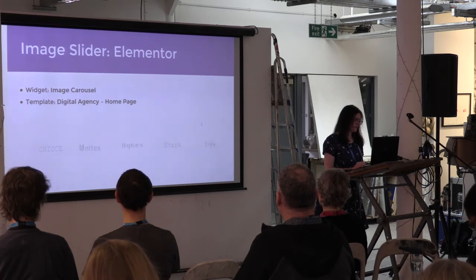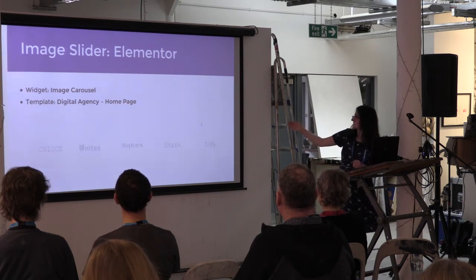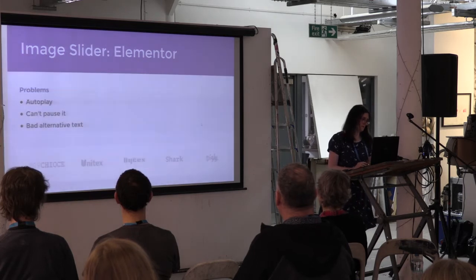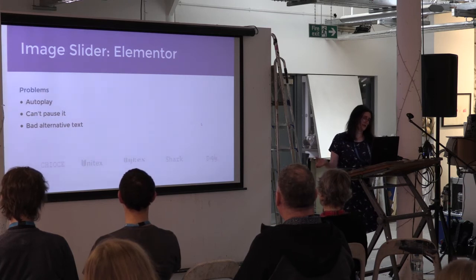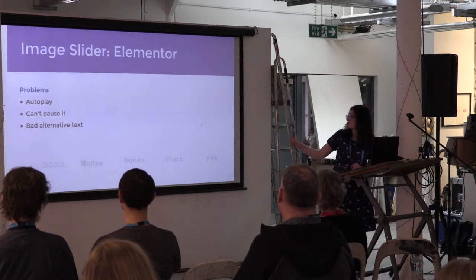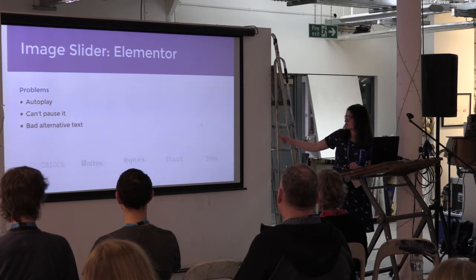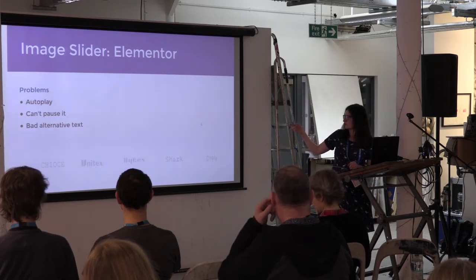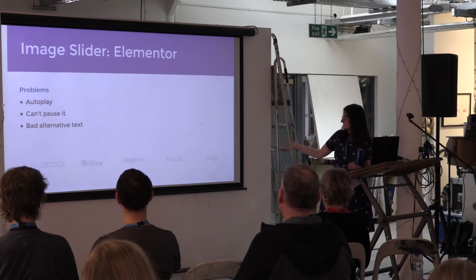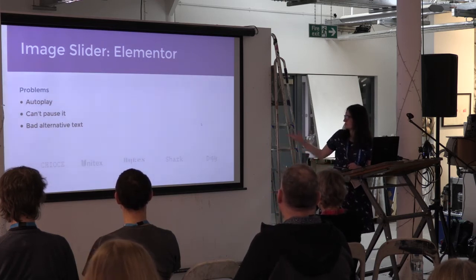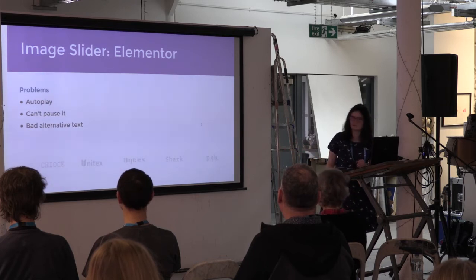Elementor's version of an image carousel — showing different logos, moving across one at a time with five on display — also has auto-play with no way to pause. Another issue is that the alternative text for all these logos is taken from the image filename, so you get something like '4.png', which is absolutely hopeless and gives no useful information to a screen reader user.